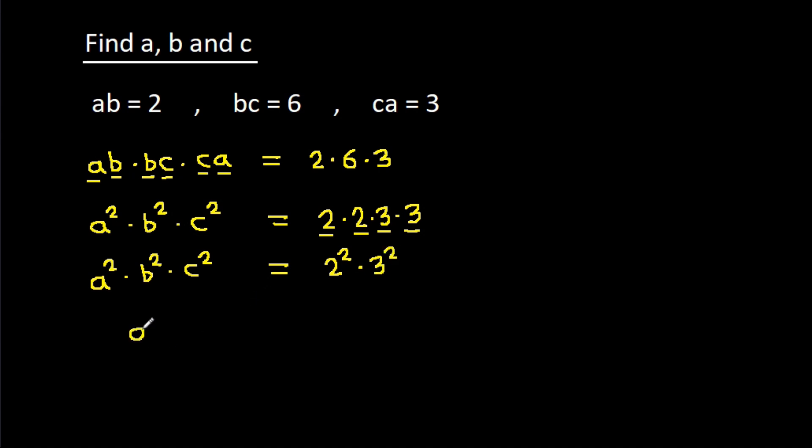And it is A times B times C squared, is equal to 2 times 3 squared. And A times B times C squared, it is equal to 6 squared.